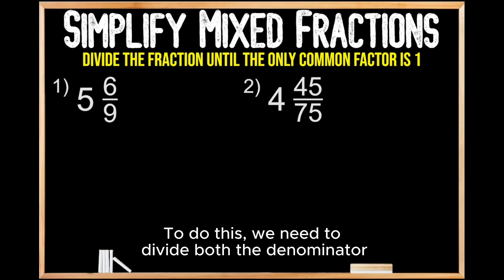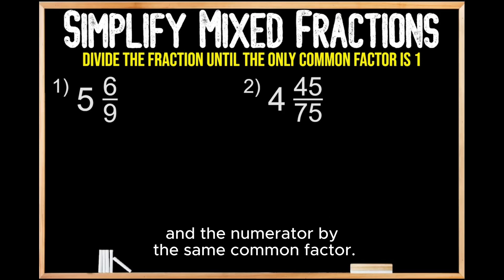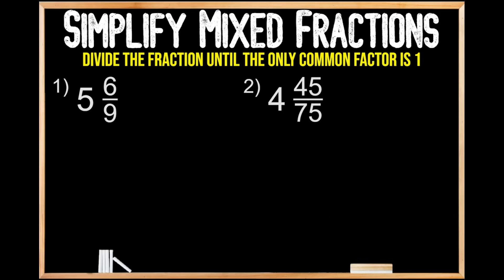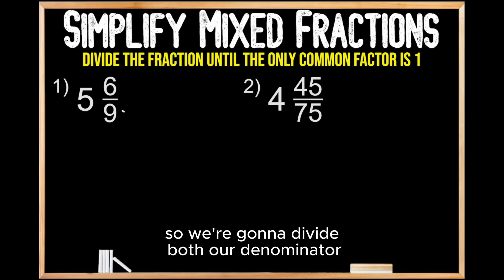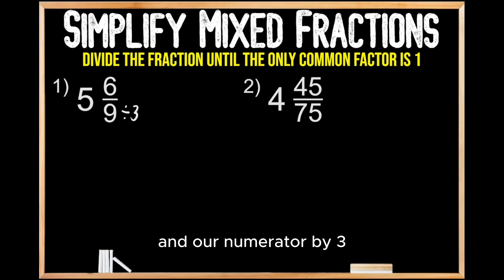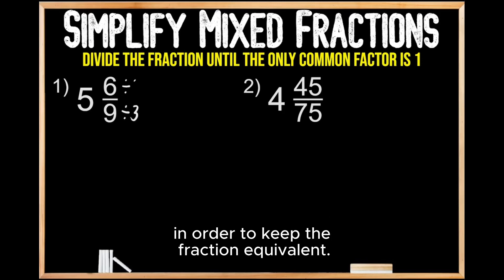To do this, we need to divide both the denominator and the numerator by the same common factor. Between six and nine, they share a common factor of three, so we're going to divide both our denominator and our numerator by three in order to keep the fraction equivalent.